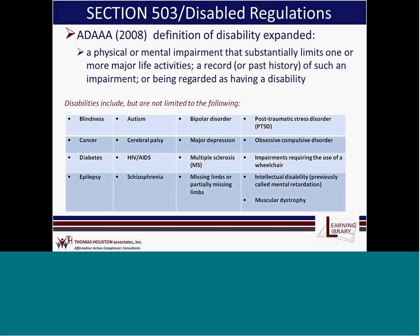The definition of disability is now expanded and includes: a physical or mental impairment that substantially limits one or more major life activities, a record or past history of such an impairment, or being regarded as having a disability. Disabilities now include but are not limited to cancer, diabetes, autism, depression, bipolar disorder, PTSD, and many others. The OFCCP is putting more onus on federal contractors and subcontractors to provide reasonable accommodations.